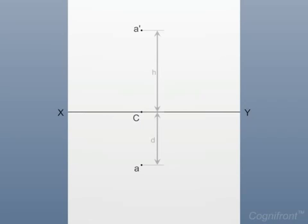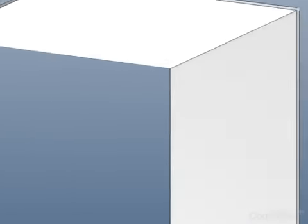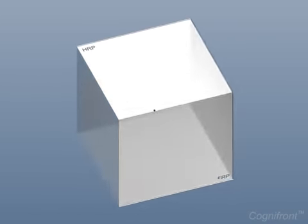Here, A and A dash represent the images of the object on VP and HP respectively. And the line joining A, A dash is the projector line and is perpendicular to the reference line XY. Now, let's see what will be the projection of a point in the third quadrant.